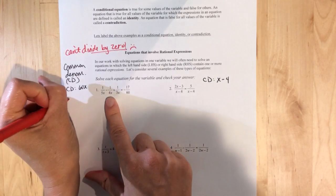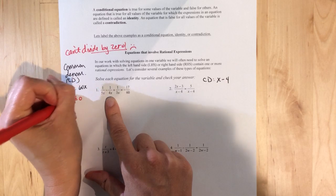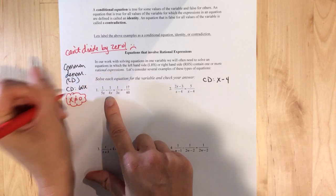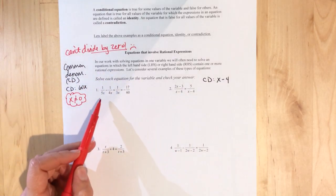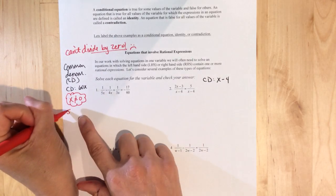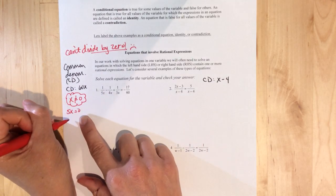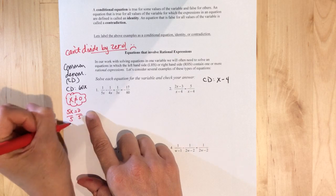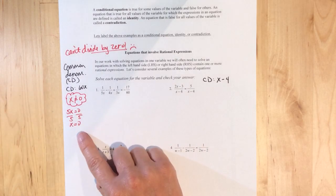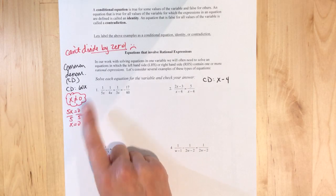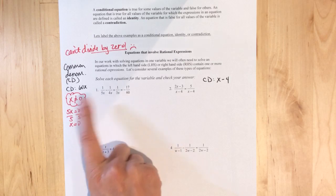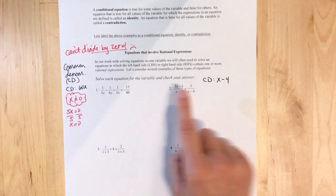So looking at number one, I know that X cannot equal zero, right? Because it's in the denominator. If I have five X equals zero and I divide by five on both sides, I get that X equals zero. So if zero is the number that would make me divide by zero, I don't want that number.